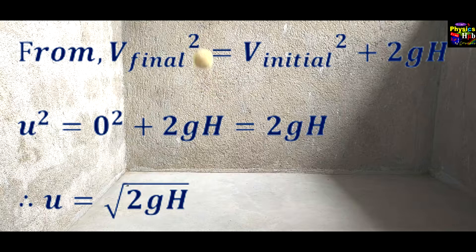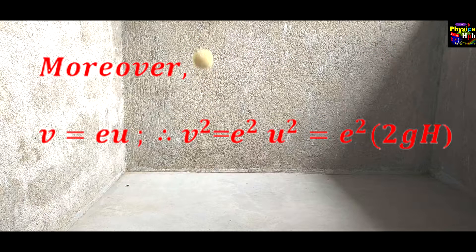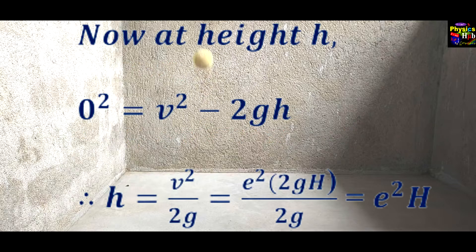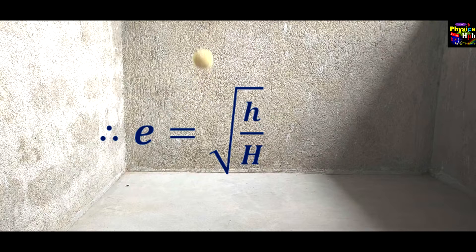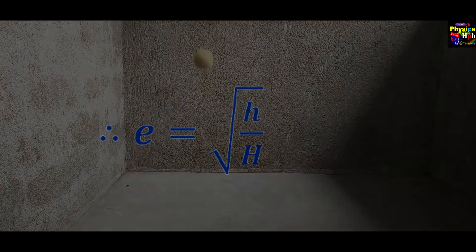From v final squared equals v initial squared plus 2gh, you get u equals root over 2gh. Moreover, v equals e times u, therefore v squared equals u squared into 2gh, and from there you can find h equals e squared into capital H. Therefore we can write small e equals root over h by capital H.